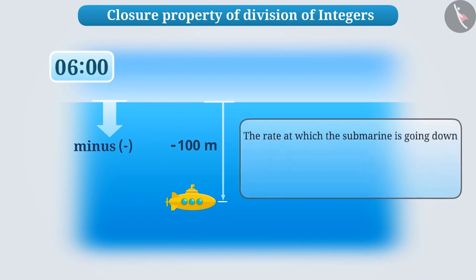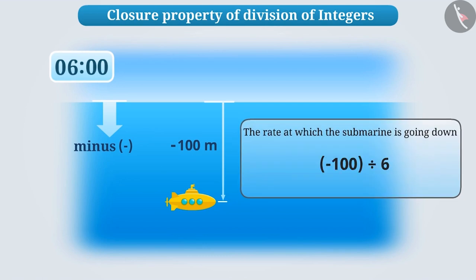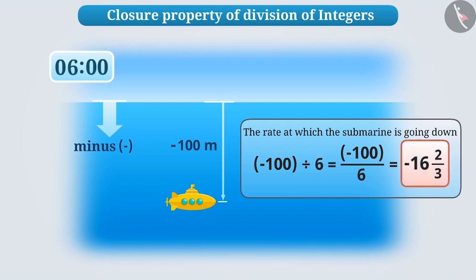Now, if we have to find out at what rate the submarine goes down, for this we have to divide minus 100 by 6. This will result in minus 100 divided by 6. This number is not an integer.